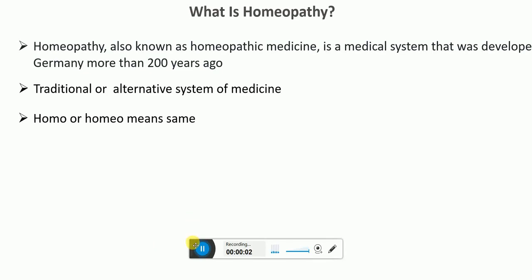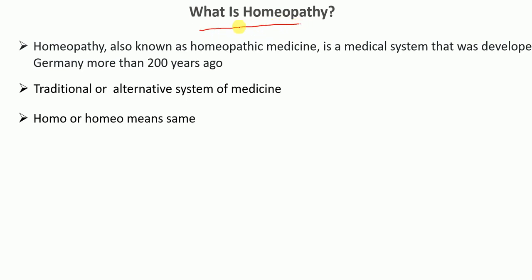In this video, I'm going to talk about homeopathy. Homeopathy, also known as homeopathic medicine, is a medicine system that was developed in Germany more than 200 years ago. It comes under the traditional or alternative system of medicine.